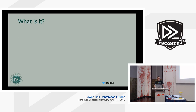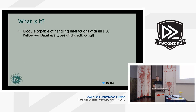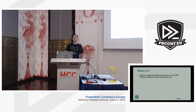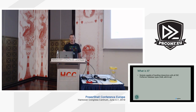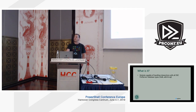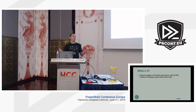So, what is it? It's a module capable of handling all the interactions with DC Pull Server databases. We've got MDB databases from the old days — the first Pull Server had the MDB database. Then EDB databases were introduced later on in Windows Server Core with the ESE NT provider. EDB is also used for things like Exchange and DHCP. And nowadays, with Server 1803 and 2019, we got SQL support for Pull Server as well — so three database types.